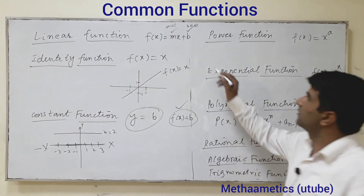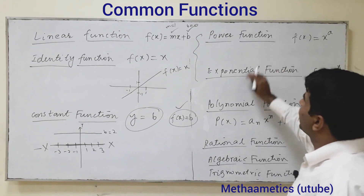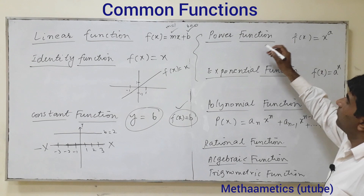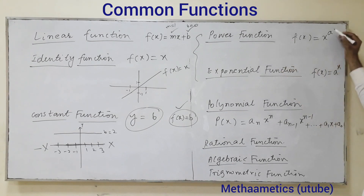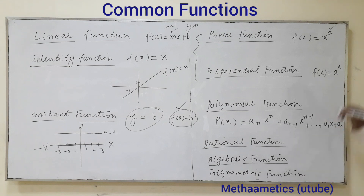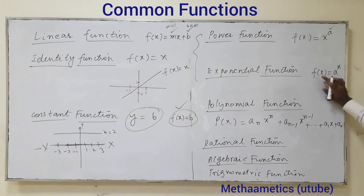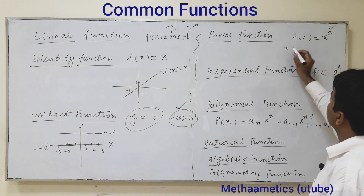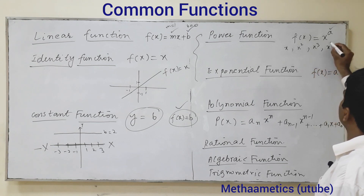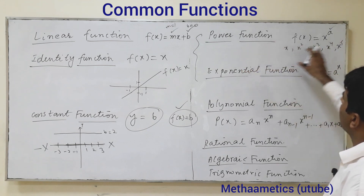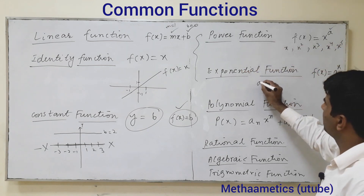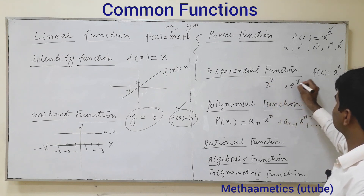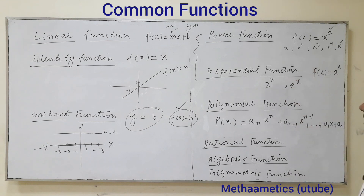Two commonly confused functions are power functions and exponential functions. In a power function, the power is a constant but the base is the domain variable, for example x, x squared, x cubed, x to the fourth, x to the fifth. In an exponential function, the base is a constant but the power is the independent variable x, for example 2 to the power x or e to the power x.